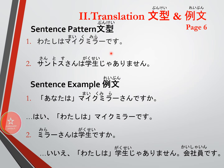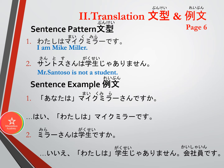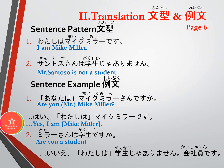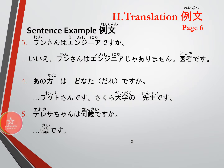Let's look at some sentence examples on page 6. Watashi wa Maiku Mira desu — I am Mike Miller. Santosu san wa gakusei ja arimasen — Mr. Santos is not a student. In the Reibun examples: 'Are you Mr. Mike Miller?' — Anata wa Maiku Mira san desu ka? Hai, watashi wa Maiku Mira desu — Yes, I am Mike Miller. 'Are you a student, Mr. Miller?' — Mira san wa gakusei desu ka? Iie, watashi wa gakusei ja arimasen. Kaishain desu — No, I am not a student. I am a company employee.